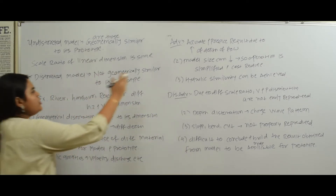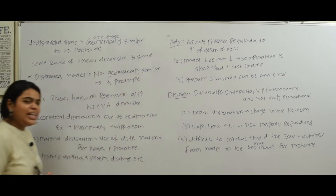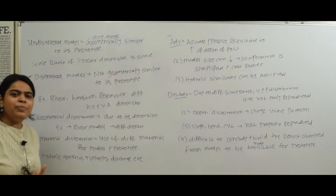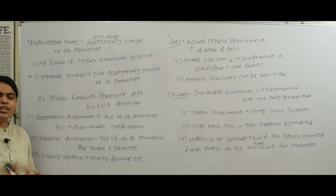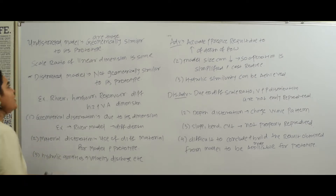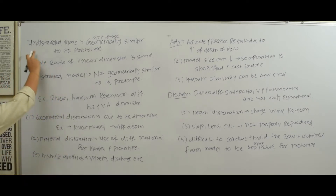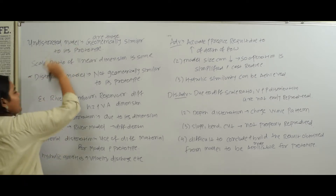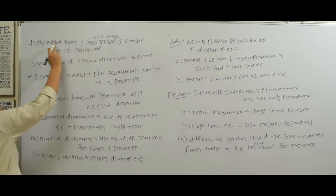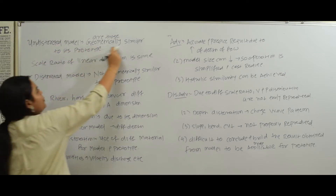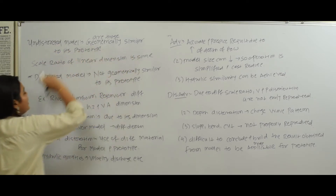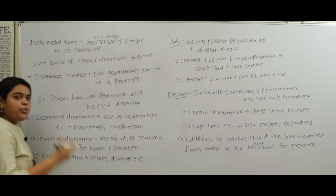So, undistorted and distorted model — this is an important topic, but it is not that difficult. Let's start with it. So, what is an undistorted model? It is a model that is geometrically similar to its prototype.